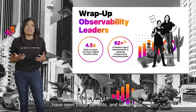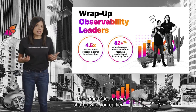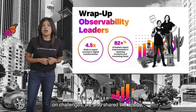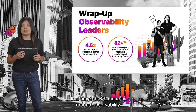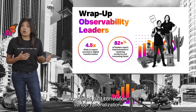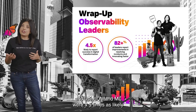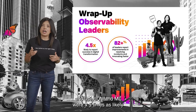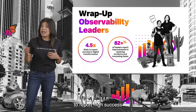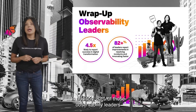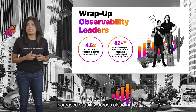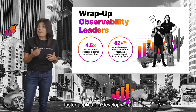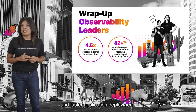People who have taken this observability journey have seen these benefits and so can you. In the same research we shared on challenges, we also share the upside. Leaders — the top 11% of organizations that have shown maturity around observability — were 4.5 times as likely to report high success in digital transformation initiatives. In addition, 82% of those observability leaders showed significant improvements in faster problem detection, increased visibility across cloud native and traditional applications, faster application development, and faster application deployment.